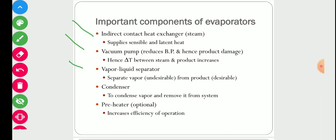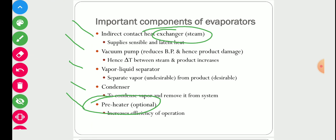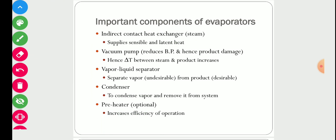The third component is a vapor-liquid separator. In the heat exchanger, the solution is boiled, forming a mixture of vapor and concentrated solution. A separator is used to separate the vapor component from the concentrated liquid component. Another component is a condenser, used to condense vapor and remove it from the system. Finally, a preheater increases efficiency — if you have a sub-cooled feed, a preheater raises its temperature to boiling point so all energy supplied is used for latent heat rather than sensible heat.